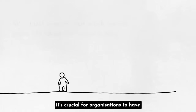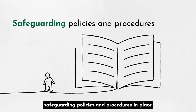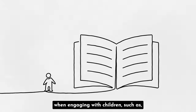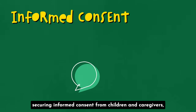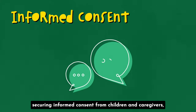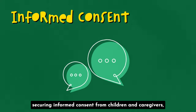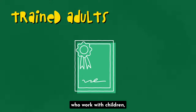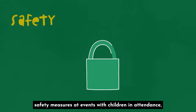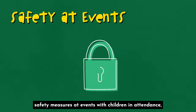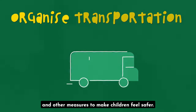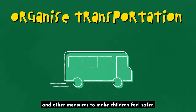It's crucial for organizations to have safeguarding policies and procedures in place when engaging with children, such as securing informed consent from children and caregivers, training and vetting staff and volunteers who work with children, safety measures at events with children in attendance, and other measures to make children feel safer.